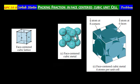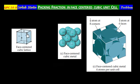In this problem, we will illustrate calculation of packing fraction in a face centered cubic unit cell. This is a face centered lattice. Each corner atom is a lattice point, so we have 8 corners and therefore 8 lattice points.